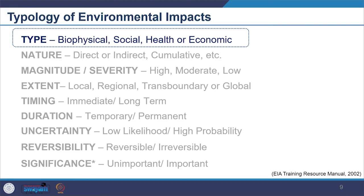Let us first look at the typology of environmental impacts. Environmental impacts can vary in type — the impact can be biophysical in nature, which we are going to look at today. One would be seeing what kind of impact happens on air, soil, land and geology, as well as on water, flora, fauna and biodiversity. We can also look into the noise level, landscape and visual assessment. All of these cover biophysical characteristics of the environment.